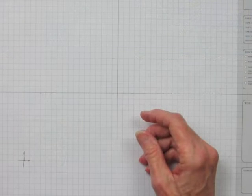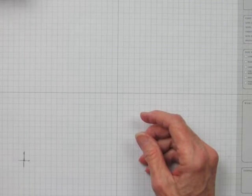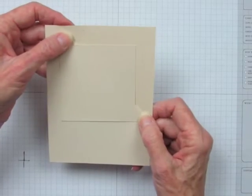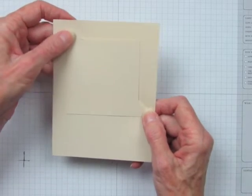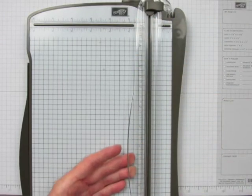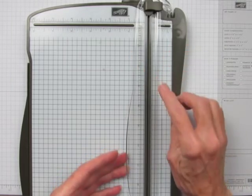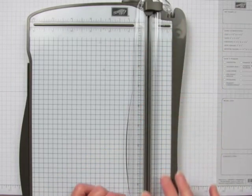In Part 1, I showed you how to cut and fold this corner fold card using the Stampin' Trimmer. But some cutters don't have good rulers along the cutting guide like the Stampin' Trimmer does.